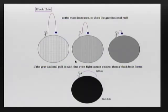If the object is more massive, you need to throw it with a faster velocity — faster and faster — until the gravitational attraction is so strong that you need to shoot something with a velocity bigger than the speed of light to be able to escape.